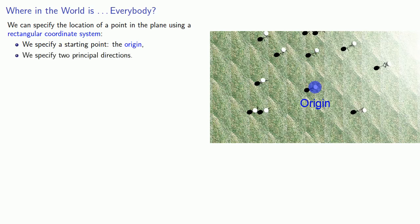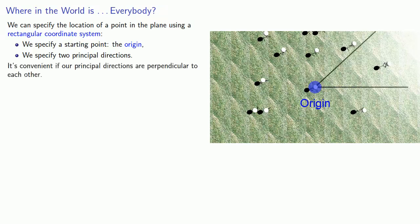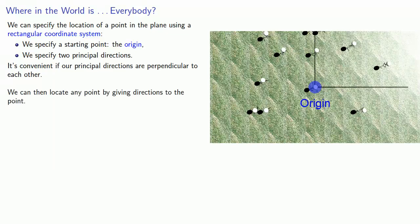Next, we need to specify two principal directions, and these have the very scientific name of this way and that way. Actually, it's convenient if our principal directions are perpendicular to each other. So we'll rotate that way so that it is perpendicular to this way. We can then locate any point by giving directions to the point with reference to our principal axes.